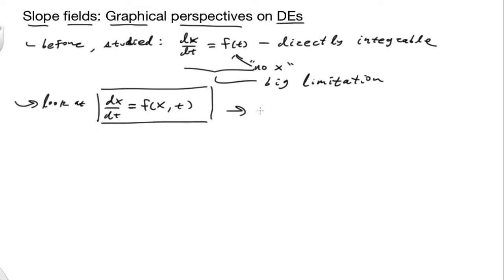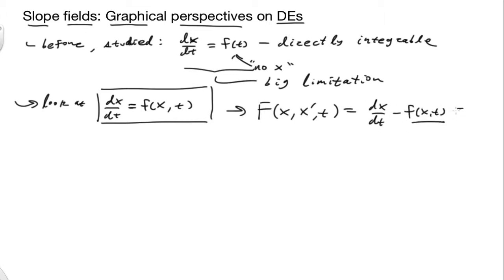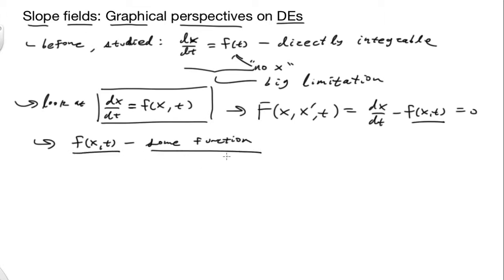In terms of our most general definition, f of x, x-prime, and t is of the form dx/dt minus f of x comma t equals zero. So f of x comma t is just some function — in this class we'll see many different functions serving many different modeling purposes.